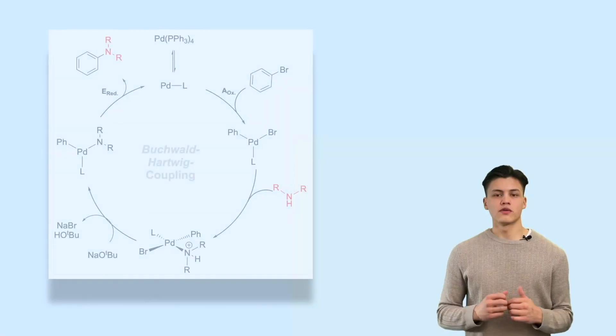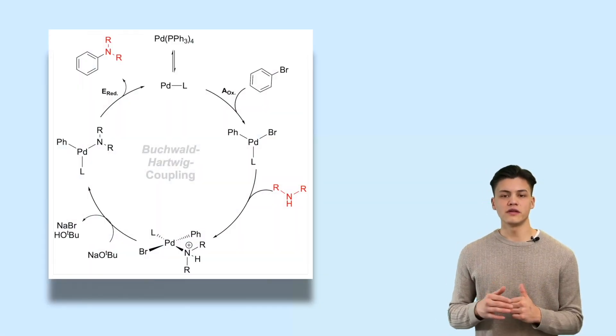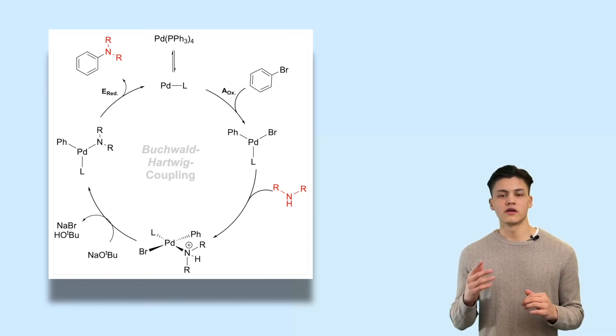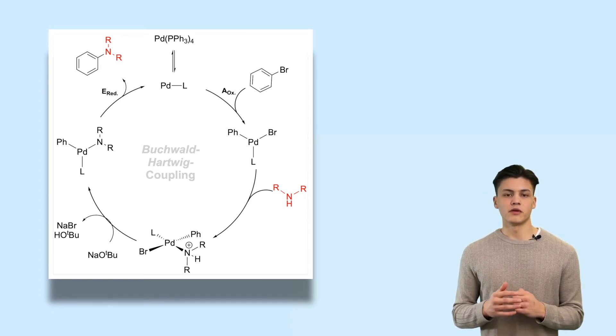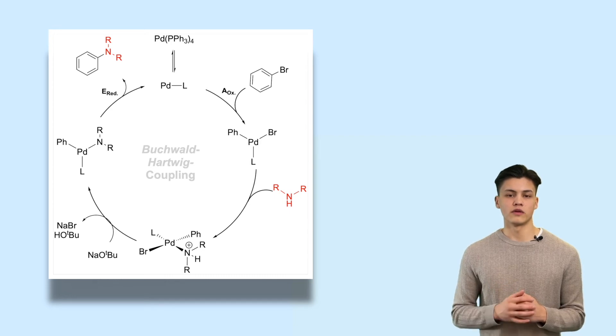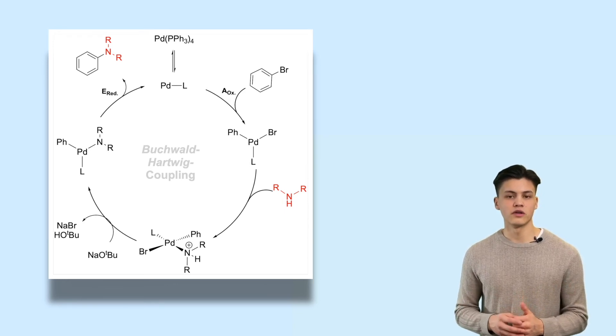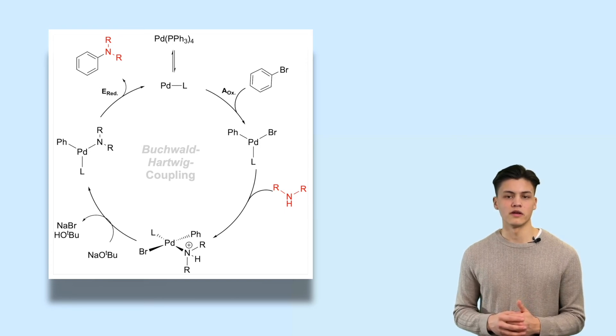Cross-coupling reactions are not restricted to carbon-carbon bond formation. We can also perform carbon-nitrogen bonding, as in the Buchwald-Hartwig amination. Here the nucleophile is an amine which bonds to the palladium catalyst. The reaction can only occur if the palladium catalyst binds to only one ligand. The mechanism follows the same scheme as before, but without a transmetalation step since there is no organometallic compound involved.